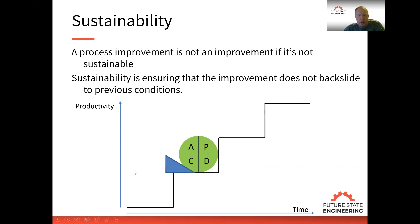So this wedge shown in the picture represents the things we've already talked about: building accountability into the process, and making that management window small so we get immediate feedback on the process. If we're not achieving the gains, we take immediate action to correct the situation.